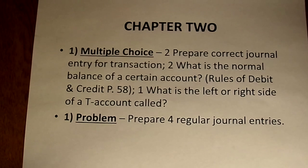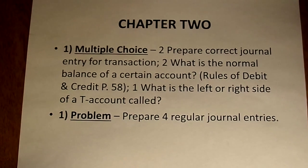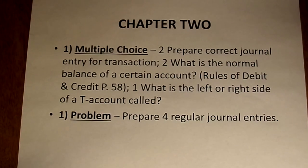For Chapter 2, there will be two questions that ask about journal entries and what the correct journal entry will be for a certain transaction. Two more questions — bringing us to four multiple choice — will be: what's the normal balance of a certain account? Think of the rules of debit and credit. One question will ask what the left side of a T-account is called — that's debit — or what the right side is called — that's credit. Five total multiple choice questions from Chapter 2.